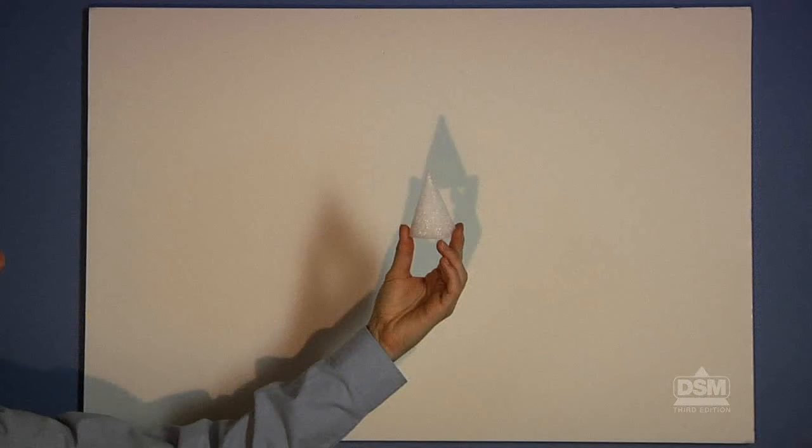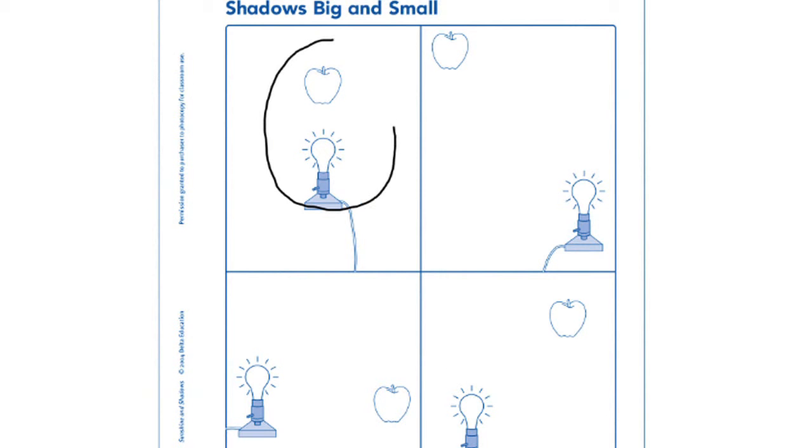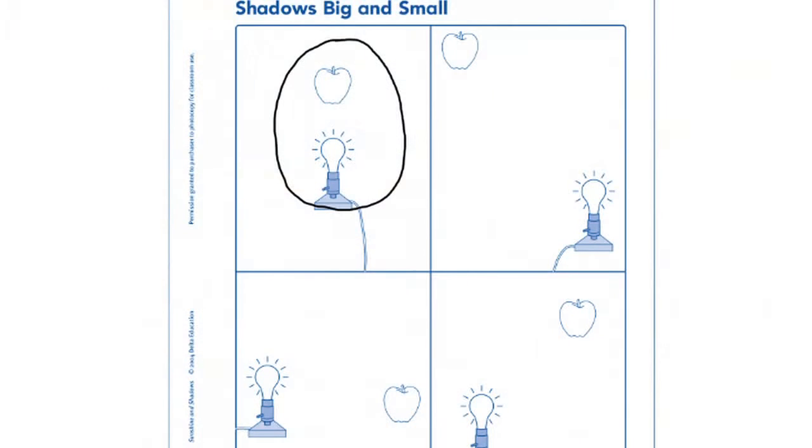Point out that the closer an object and light source are to each other, the bigger the shadow will be, and the farther apart an object and light source are, the smaller the shadow will be. Turn on the lights and give each student a copy of Activity Sheet 8. Tell students to look at the pictures and decide which setup would create the biggest shadow and circle that picture. Then have them look at the pictures again, decide which setup would create the smallest shadow, and mark an X by that picture. Finally, review their answers with the class.